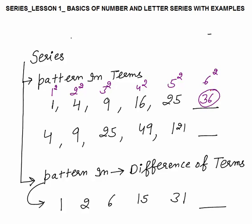The second series is 4, 9, 25, 49, and 121. Now 4 is 2 square, 9 is 3 square, 25 is 5 square, 49 is 7 square, 121 is 11 square. The pattern is that all five terms are squares of consecutive prime numbers — 2, 3, 5, 7, 11 — in increasing order. The next prime number is 13, so 13 square is 169, and that is our final answer.